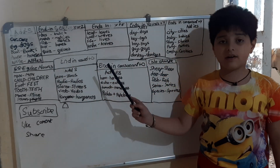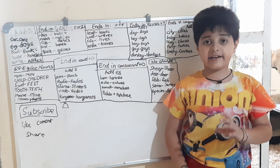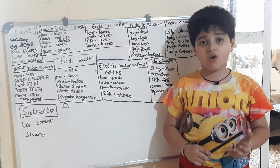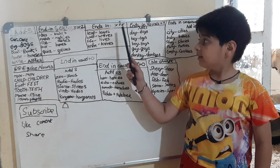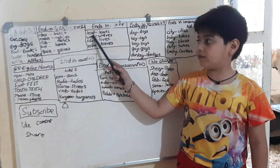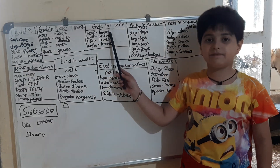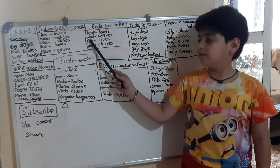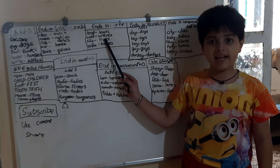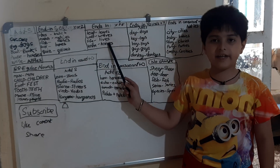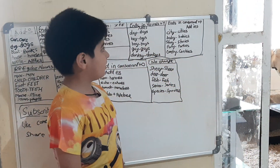Ending in F or FE — the word should be ending with F or FE. Let's take an example: life becomes lives. Wolf becomes wolves. Knife becomes knives. Same like this.